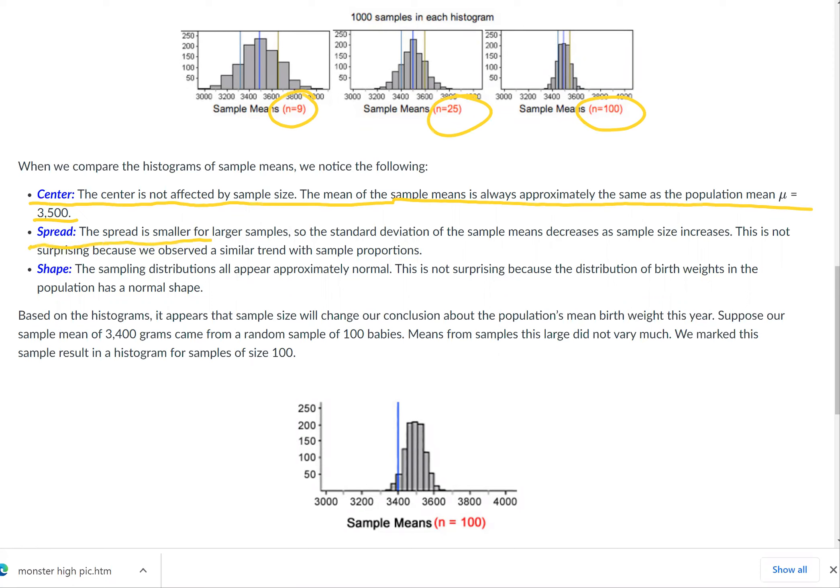The spread. The spread is smaller for larger samples. As you see for n = 100, all the samples are pretty much between 3,300 and 3,700 or so. You see the very leftmost and the rightmost values, but they're a lot more spread out. For example, for n = 9, they go as low as 3,000 and as high as 4,000, it looks like...